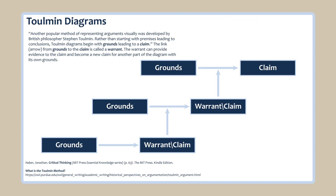According to Jonathan Haber in Critical Thinking, another popular method of representing arguments visually was developed by British philosopher Stephen Toulmin. Rather than starting with premises leading to conclusions, Toulmin diagrams begin with grounds leading to a claim. We call the link arrow from grounds to the claim a warrant. The warrant provides evidence to the claim and becomes a claim for another part of the diagram with its own grounds. The Toulmin diagram looks similar to the syllogism diagram but allows for flexibility, in that the warrant can represent support to a claim and be a claim itself.